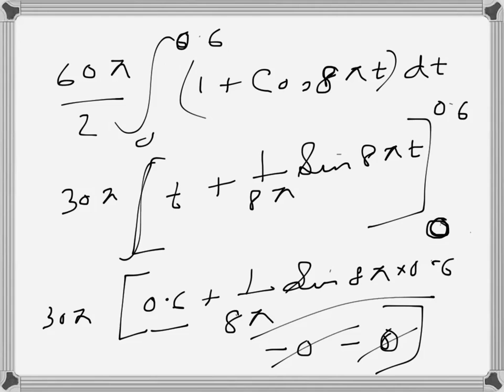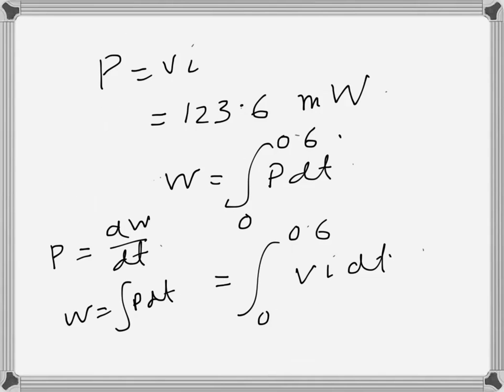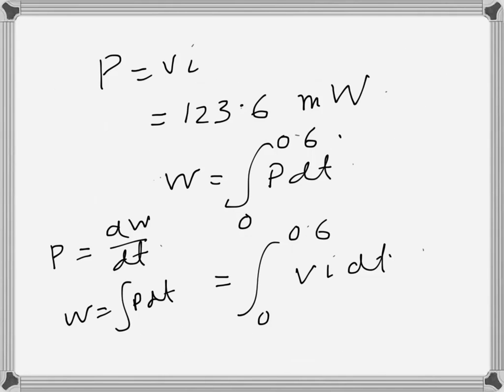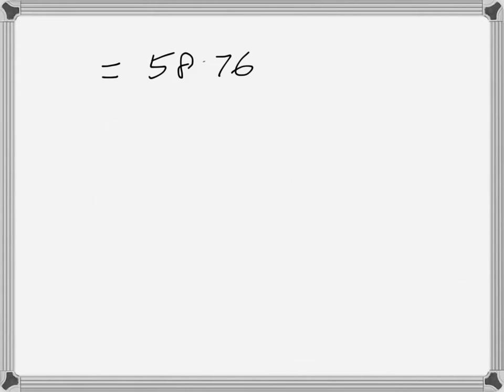We have only this term and this term. Once I do it, I get the energy 58.76. Now the unit: we have to remember the current was in milliampere, so the power was in milliwatt. So this one will be in millijoule. That will be the energy delivered within that time interval.